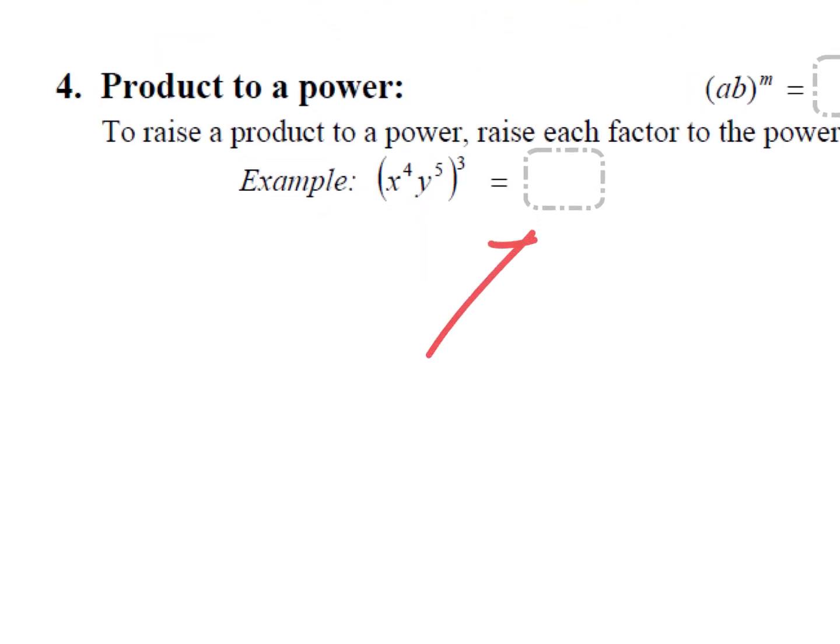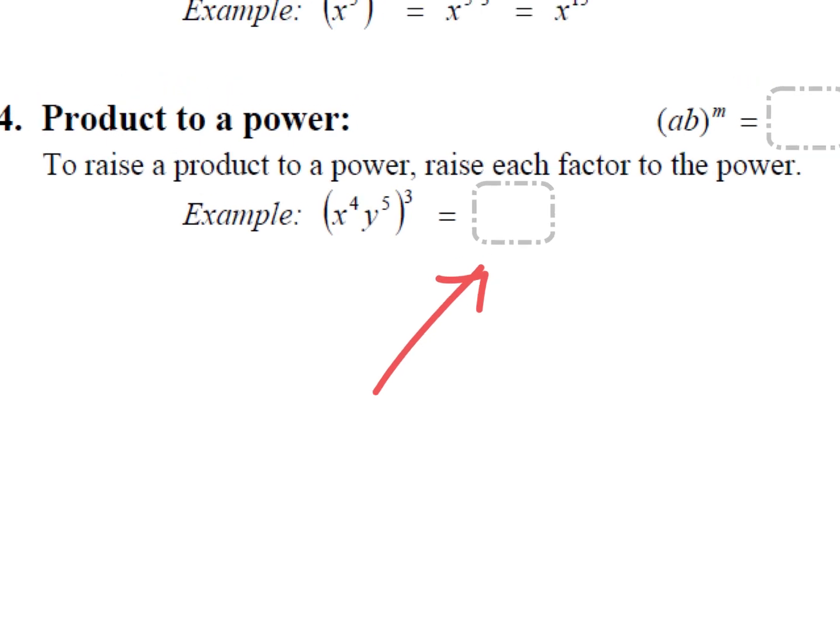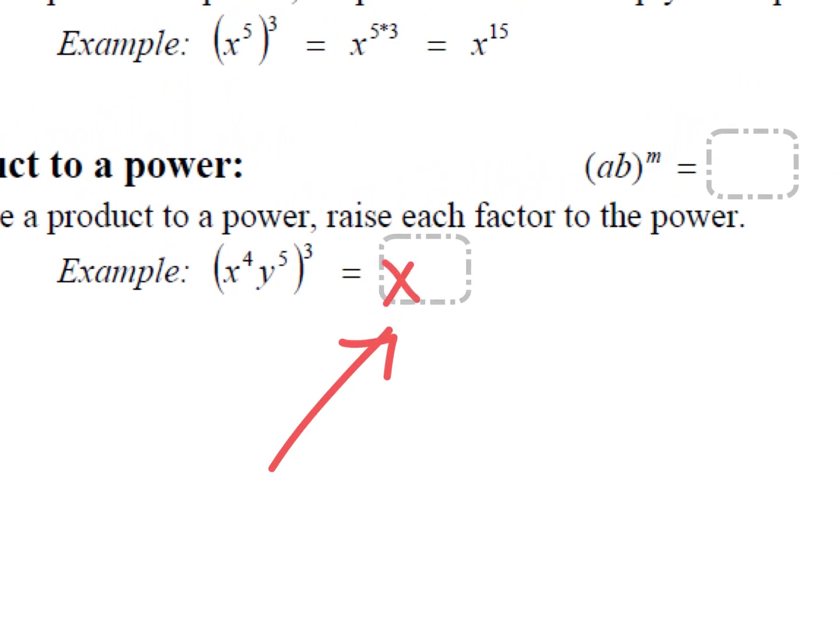Focus on this one right now. You should have said X to the, and on this kind if you're struggling, bring it out and go X to the fourth to the third. You know what I mean? Like that's really what I got to do. And then go, that really means X, X, X, X to the third. What do you think that is? X to the what? Twelfth.